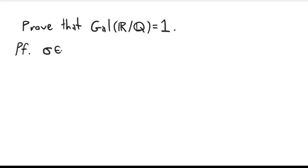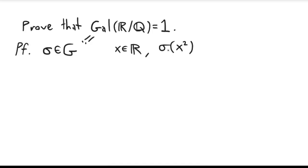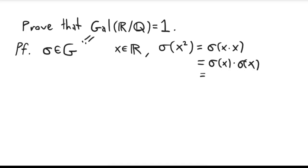The first step is we're going to assume that sigma is an element of G. The first thing I want to observe is that if I take any real number x, because sigma is, by assumption, a field automorphism, sigma of x squared equals sigma of x times x. And because sigma is an automorphism, I can write this as sigma of x times sigma of x, which is sigma of x, squared. So sigma sends the square of a real number to the square of a real number.